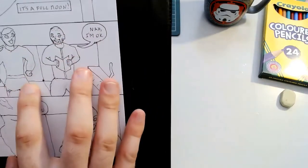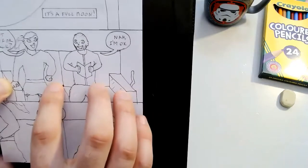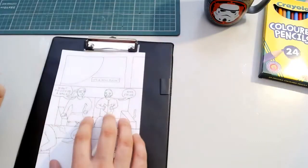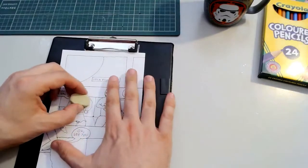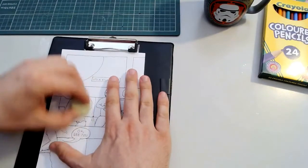but I've done the inking over the pencil lines. So what I want to do now is I want to take my rubber and I want to lightly go over the whole page and just rub out those pencil lines.